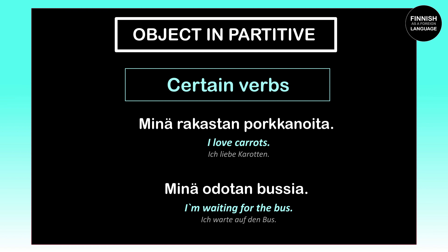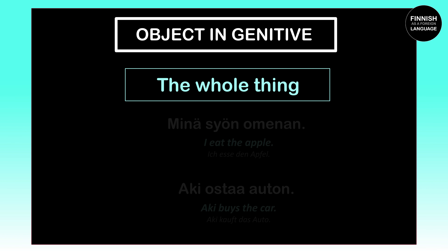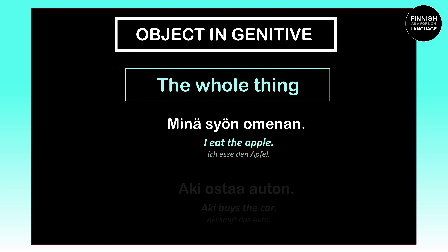Now let's figure out when our object has to appear in the genitive case. The object has to stand in the genitive case when we're talking about a thing as a whole. Here's one example: 'Minä syön omenan' means 'I'm eating an apple.' With this sentence we express that we are eating an apple and also going to finish it — our intention is to eat the whole apple. That is why 'omena' becomes 'omenan,' the genitive case.